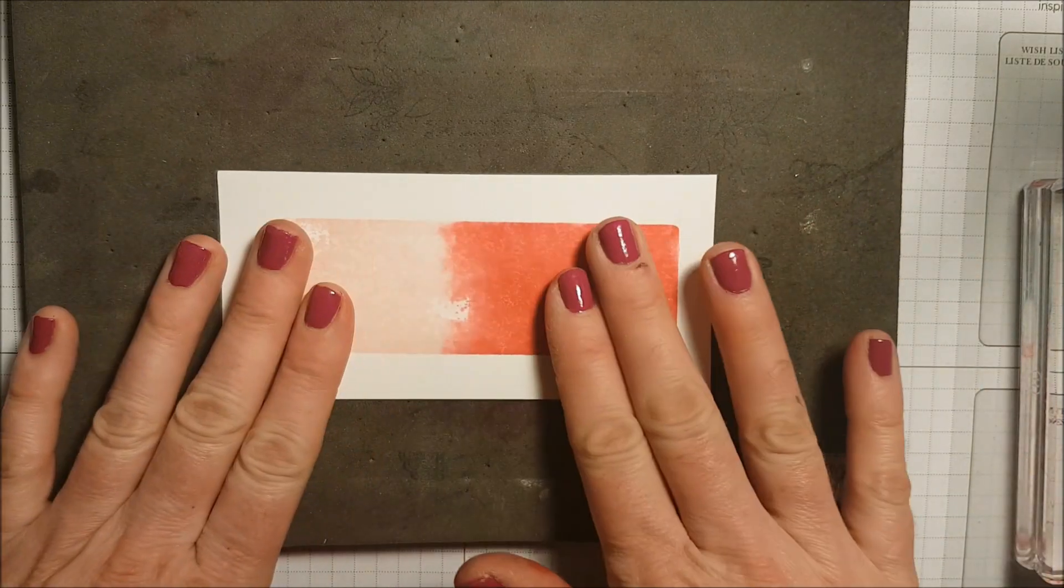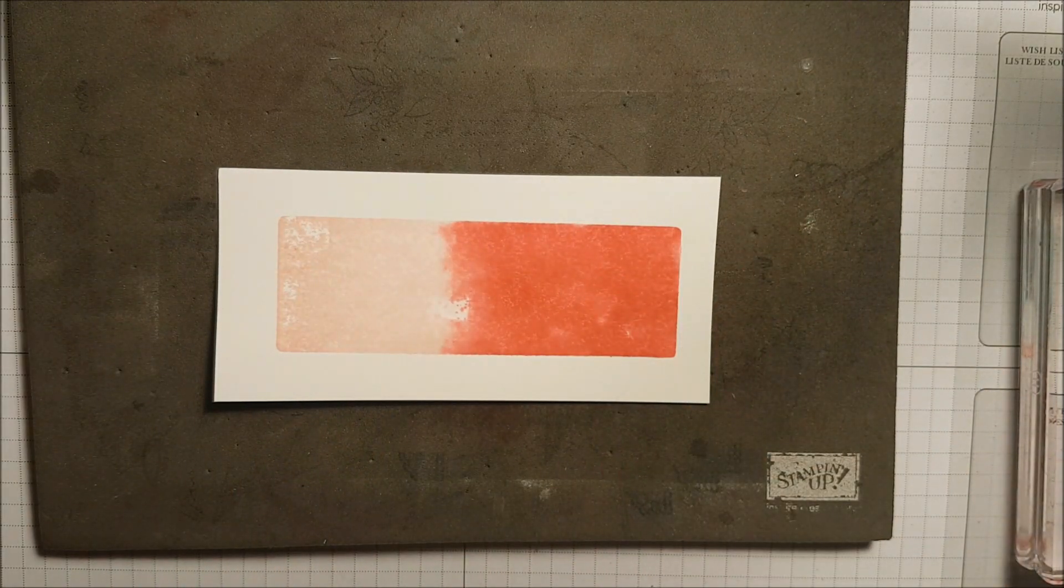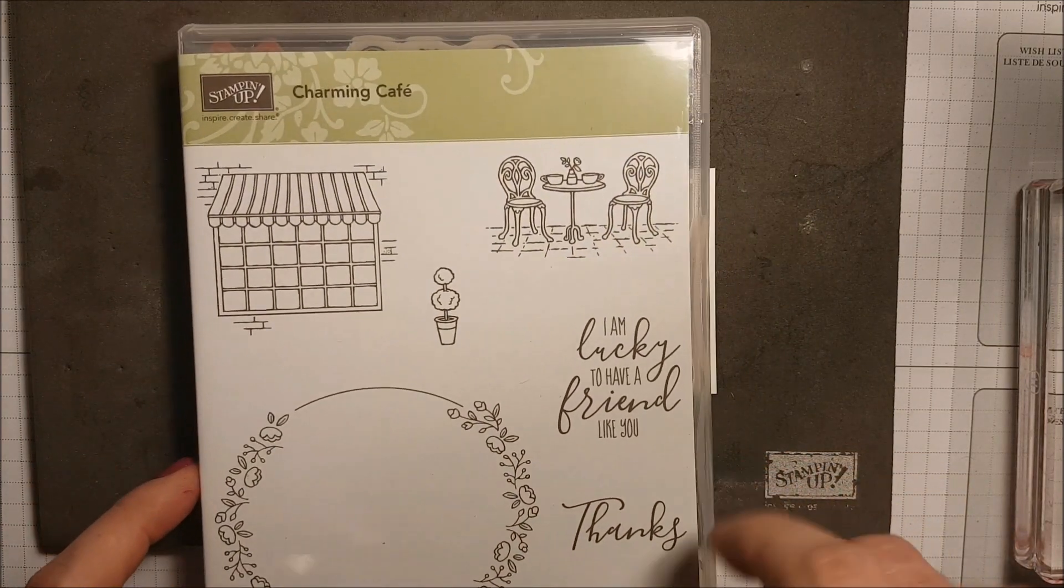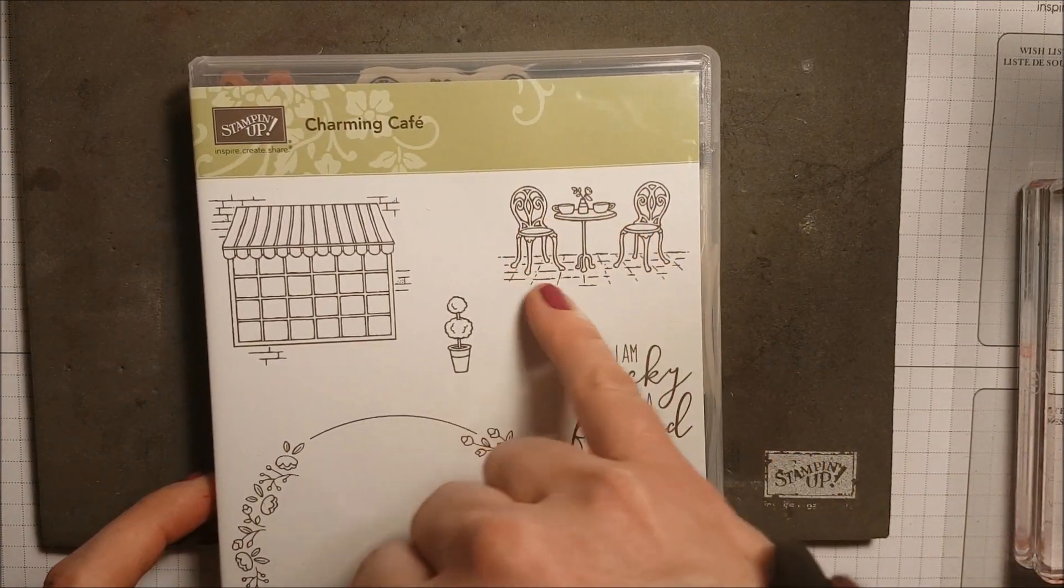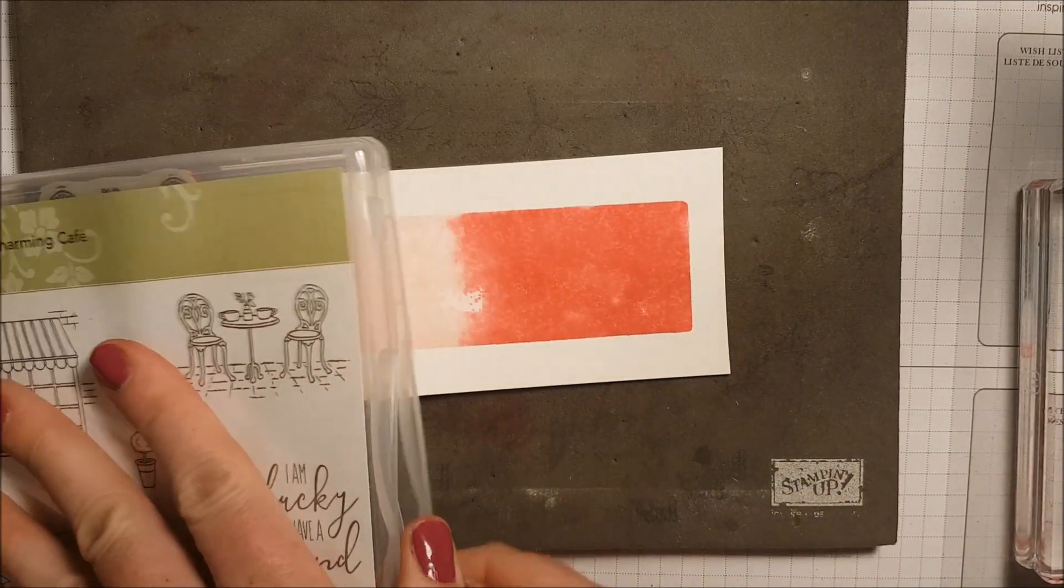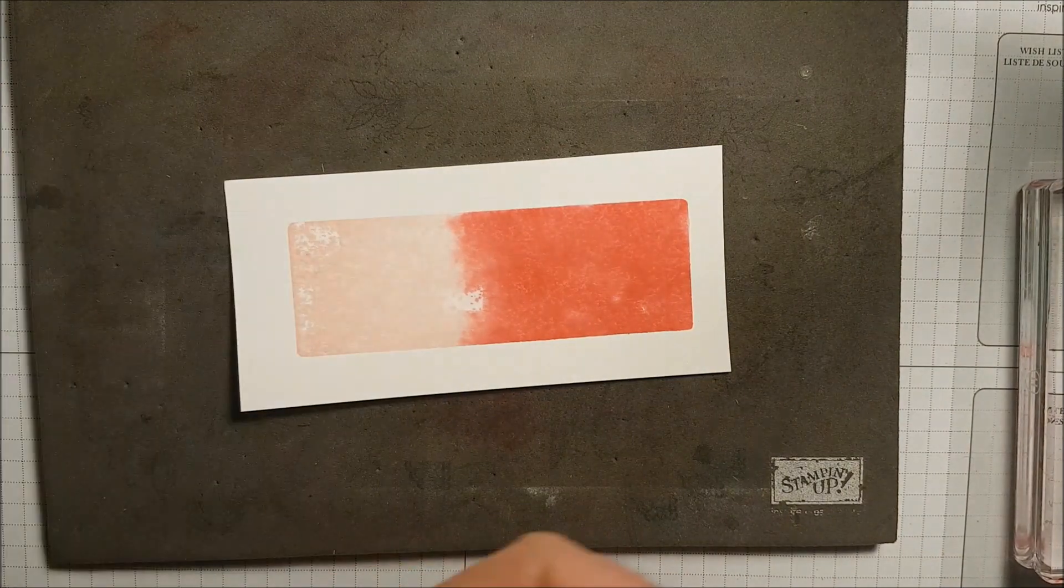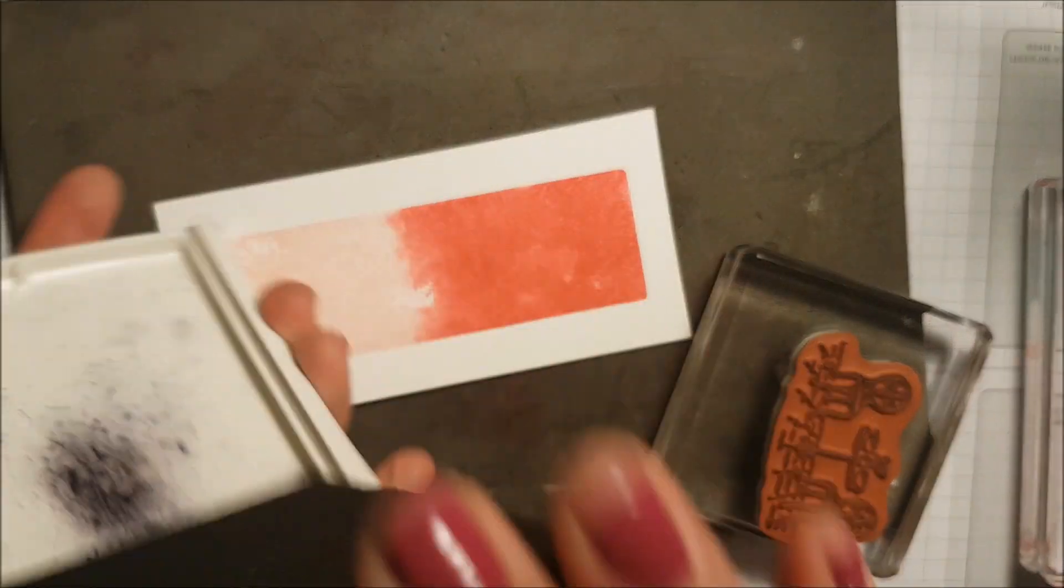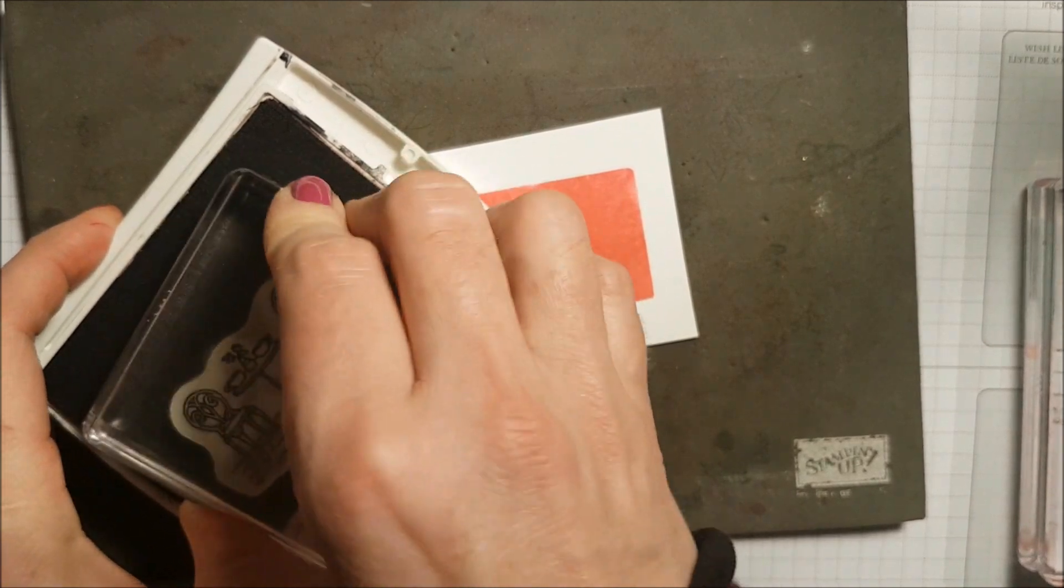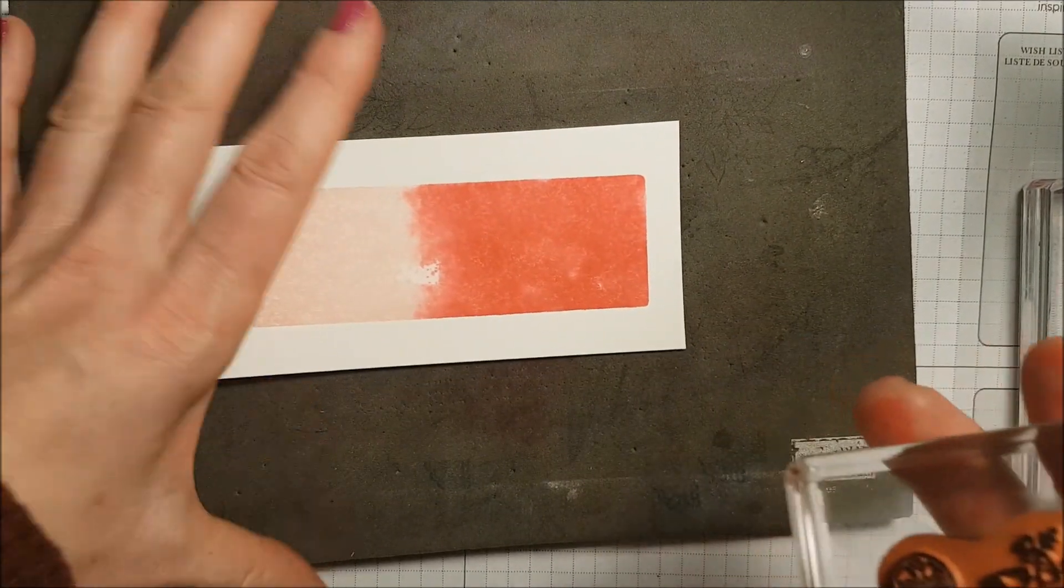Okay, so this is nice and dry and ready to be stamped on. I'm using the charming cafe for this card. We're using this cute little image right here with the 'I'm lucky to have a friend like you.' Let's stamp the little chairs first in my basic black archival ink and this is going to get stamped right onto the red portion.